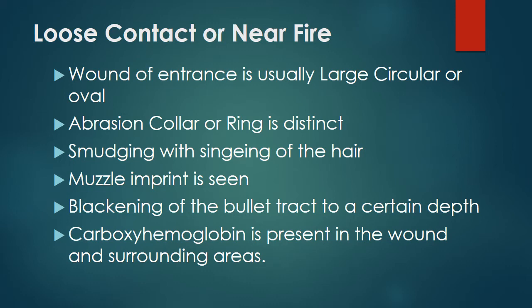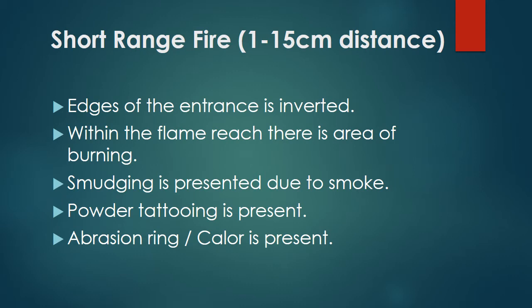In loose contact or near fire, the wound of entrance is usually large, circular or oval. The abrasion collar or ring is distinct. Smudging with singeing of hair is present. Muzzle imprint is seen. Blackening of the bullet track is present to a certain depth. Carboxy-hemoglobin is present in the wound and surrounding areas.